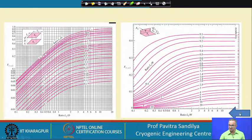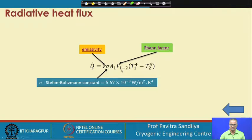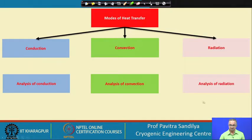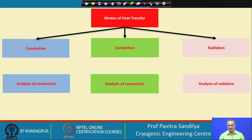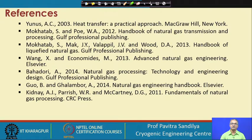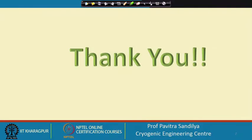The shape factor is generally obtained from charts and is also called the view factor or orientation factor. Charts are given to find the value of the shape factor — we need to know the dimensions of the two surfaces A1 and A2 to find F12. With these values, we can use the radiative heat transfer formula with T1 and T2 as the temperatures of surfaces 1 and 2. With this, we have looked into the various types of heat transfer. More on this can be found from the references. Thank you.